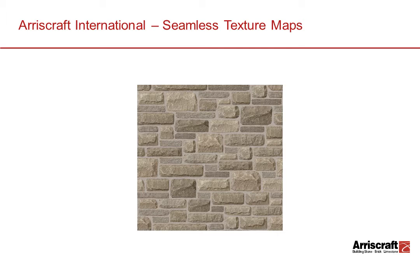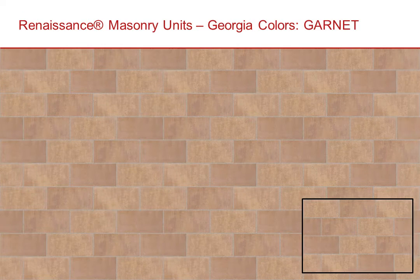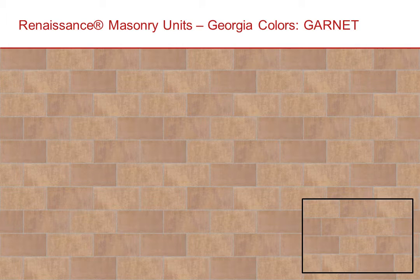Notice how the texture map image is a small representative section of stone. This section is aligned at all four sides to create a repeatable image when mapped to a model face. The small section is shown on the bottom right with the resulting expanded image shown in the background.